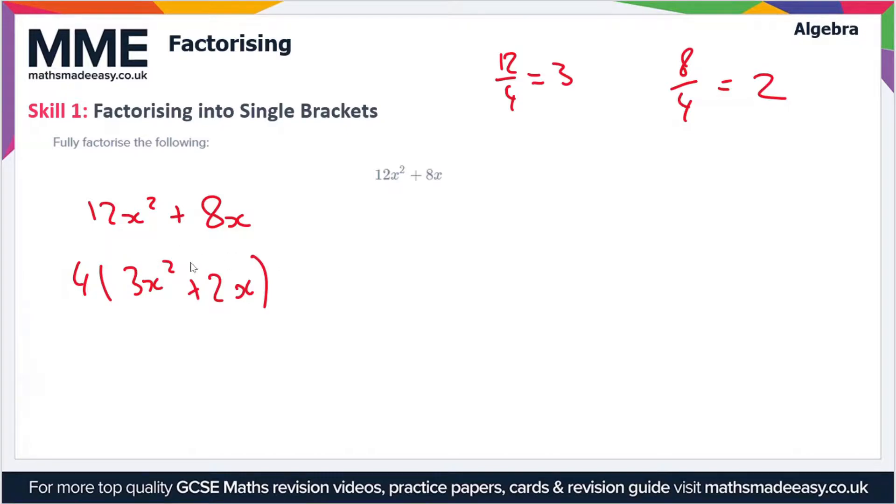But we're not done yet because both terms inside the bracket also have a common factor of x. So we can take out a factor of x from 3x squared. If we divide 3x squared by x we're left with 3x. And if we divide 2x by x then we're going to be left with 2.